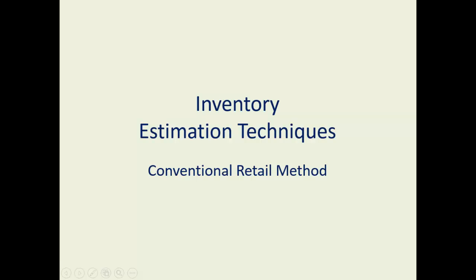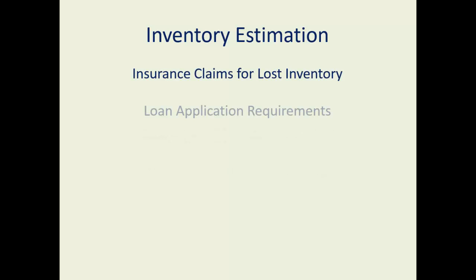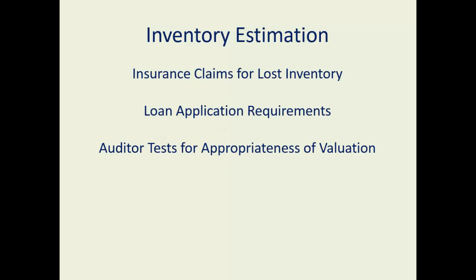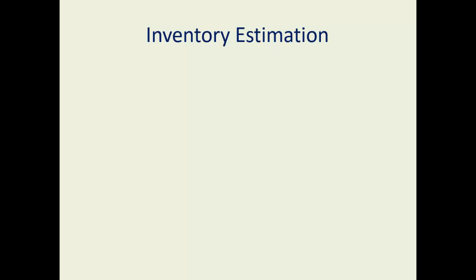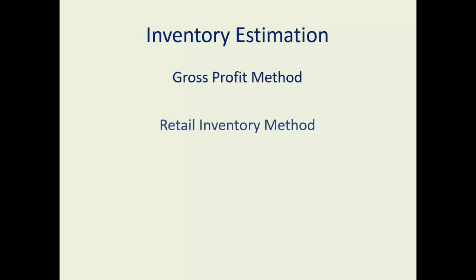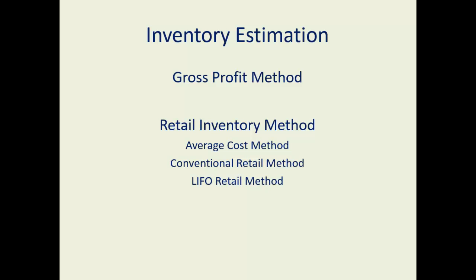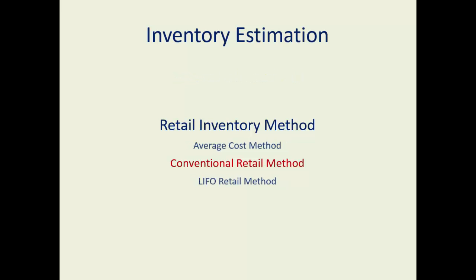Now we'll look at the second retail inventory method, the conventional retail method. To review, an inventory estimation is used for many different things: insurance claims, loan applications, budgeting, audit tests, and interim financial reports. There's the gross profit method and the retail inventory method. Of the retail inventory method, there are three different ways to calculate it. We're going to look at the second one, the conventional retail method.